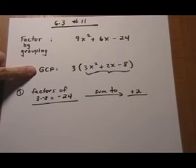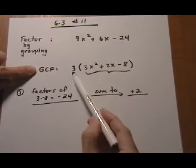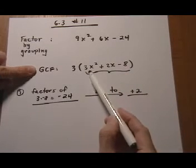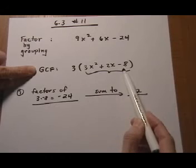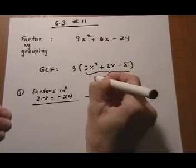But before you do anything else, always check to see if you can pull out a GCF. And for this trinomial, we can pull out a 3, and we're left over with 3x squared plus 2x minus 8. That is the trinomial that we're going to use these steps for now.